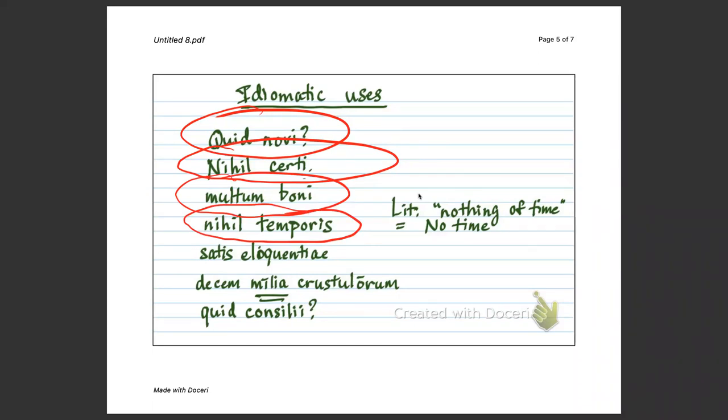Satis eloquentiae. This one might sound a little better to English speakers. You can say enough eloquence, or enough of eloquence. I think we say both. Oh, my goodness, can you imagine? Ten thousand cookies. That's the idiomatic way of translating it. In translationese, ten thousands of cookies.